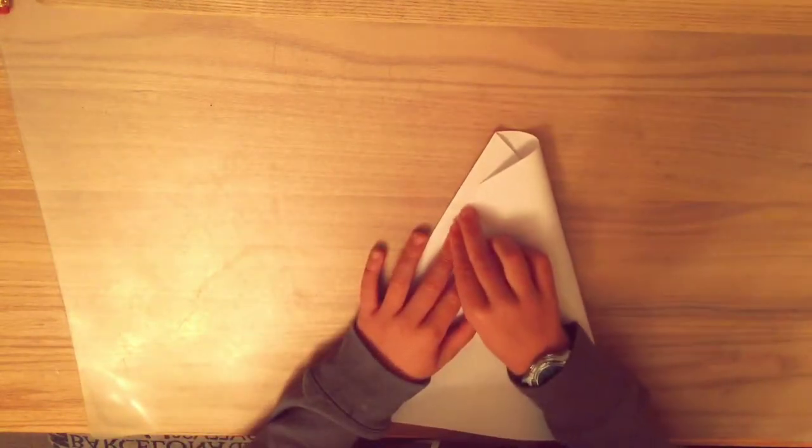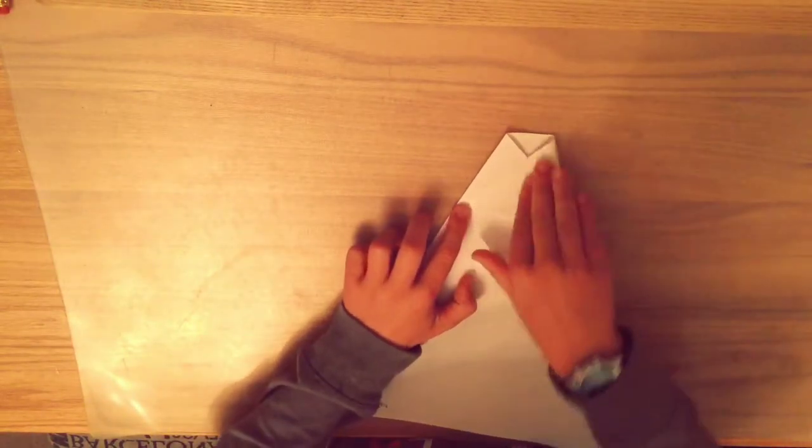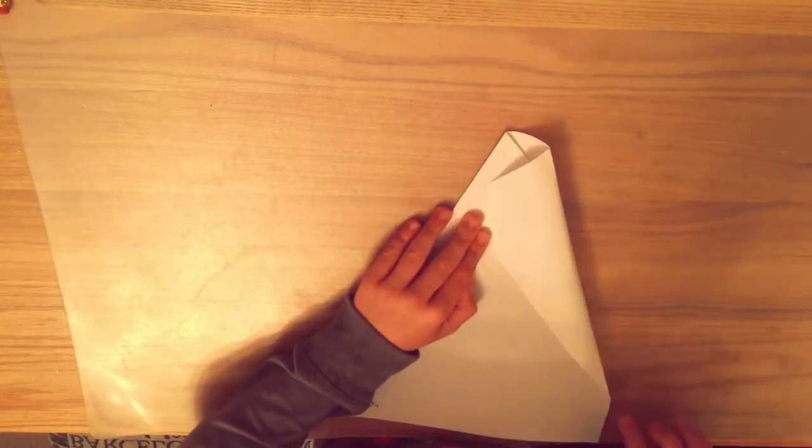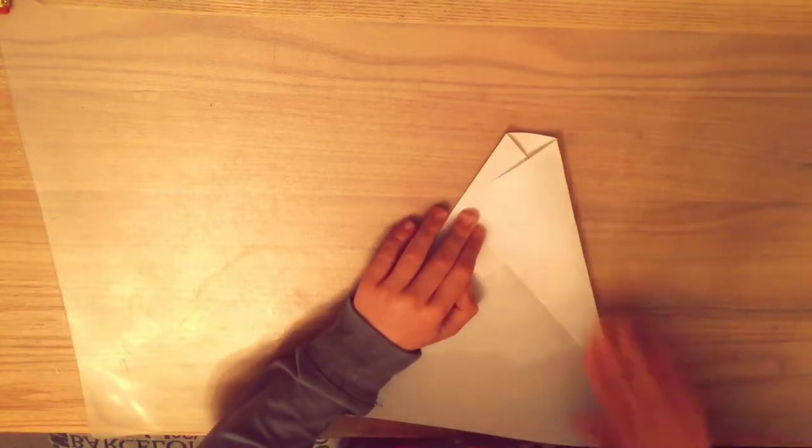Now we're going to take the other side, fold over, and make sure it's lined up with that edge. Put that area out and smush it down.